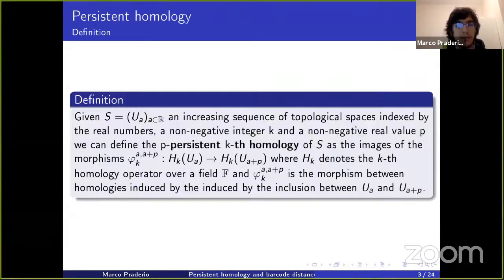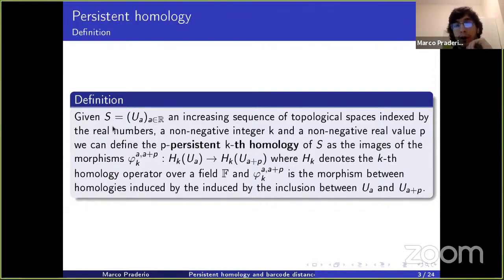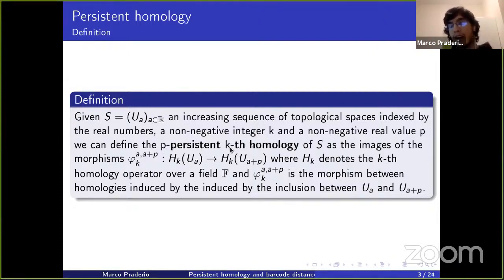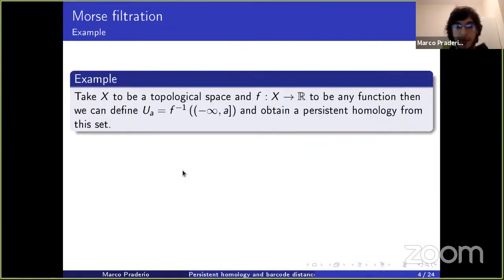Persistent homology is defined on a filtration of topological spaces. The homology changes by taking the inclusions of these topological spaces and seeing their induced maps on the k-th homology. The p-persistent homology at level k is the image of the morphism induced by the inclusion between the space U_a and U_{a+p} in the k-th homologies.